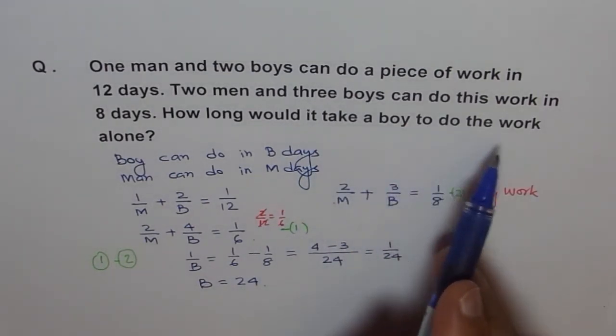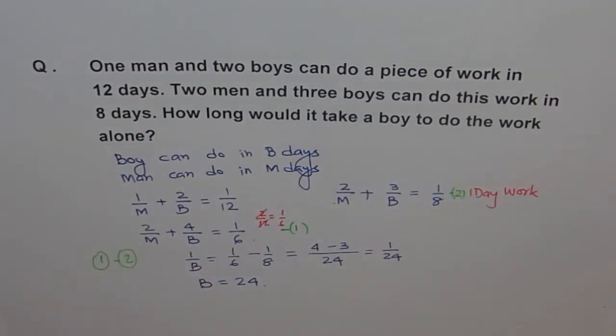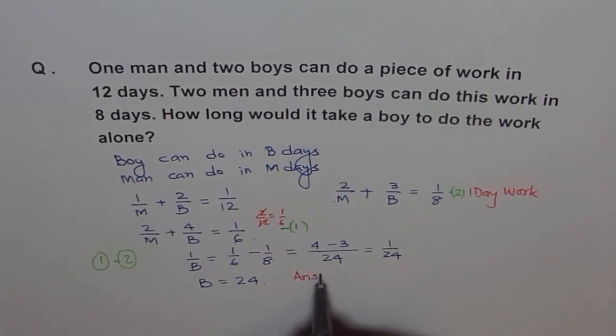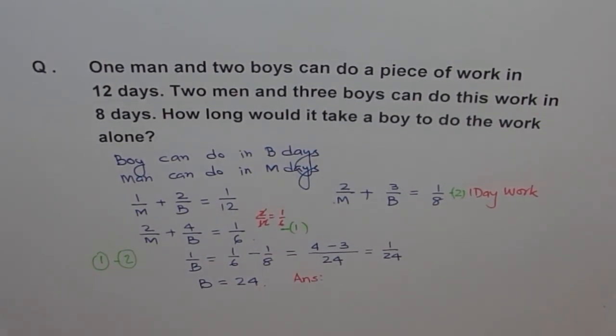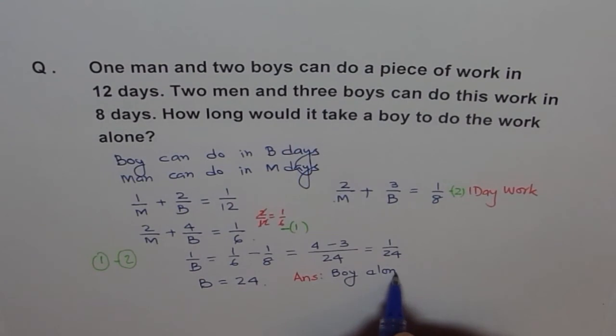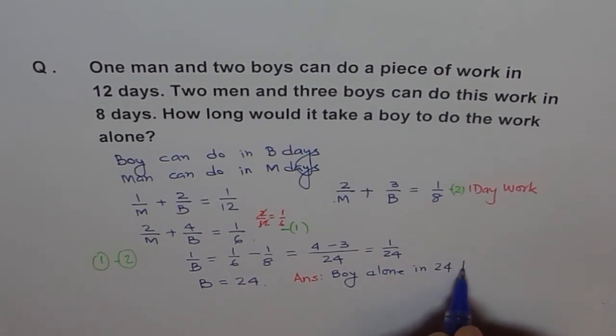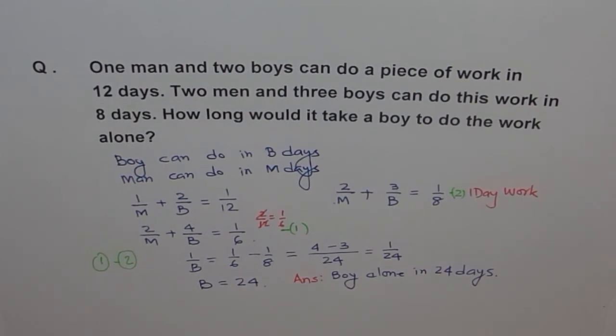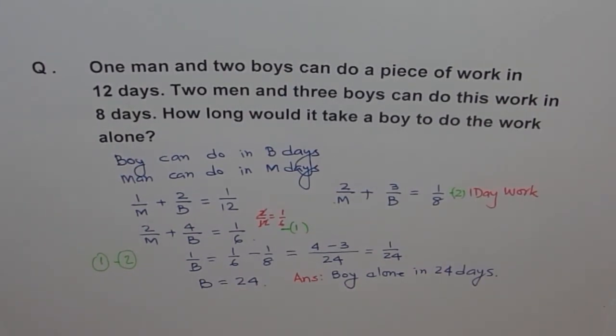How long would it take a boy to do the work alone? So therefore, what is our answer? Boy alone can do the work in 24 days. That's how we do such problems. So the trick part is, just get to 1 day. That means kind of a rate. Convert to rate type of equations and then you can solve these problems very easily. I hope you get the concept and you feel confident of solving such problems. If you have any suggestions or any problems, please do write in the comments and I will be glad to answer them. Thank you.